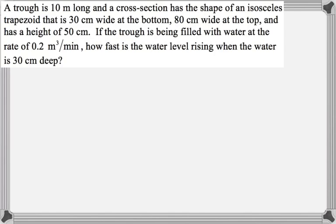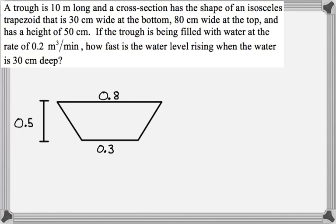So I'm going to draw a picture of what I think this looks like. So here's my isosceles trapezoid, and I'm going to use 0.8 on the top, 0.3 on the bottom, and then 0.5 on the overall height. And so those are in meters.